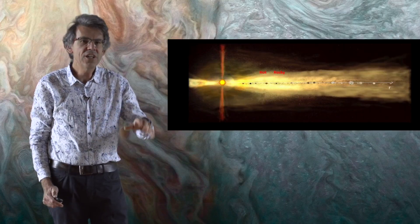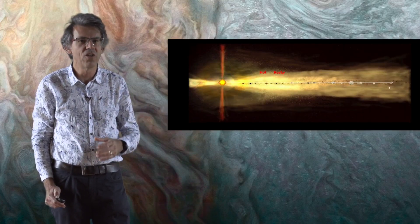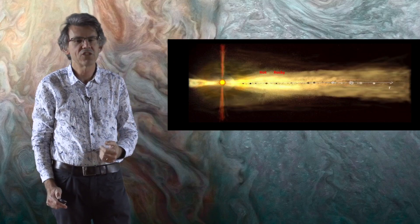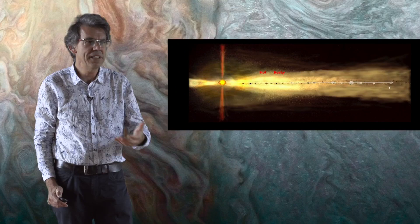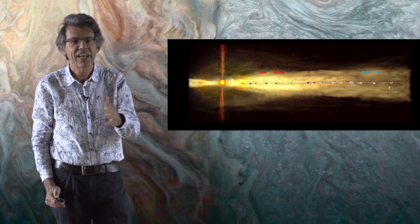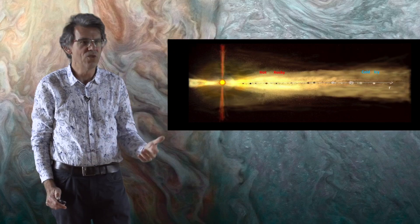Now in the protoplanetary disk, the temperature changes as a function of the distance from the Sun. In the inner part, the disk is hot, so the only solid elements are in rocky form, whereas in the outer part, the disk is cold, so solid material can be in icy form. And the boundary between the hot rocky disk and the cold icy disk is called the snow line.